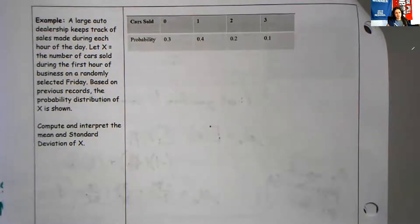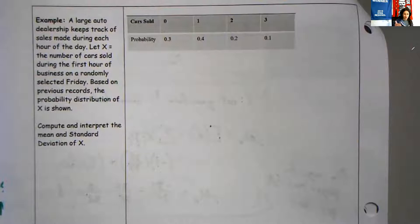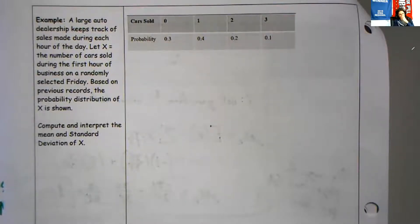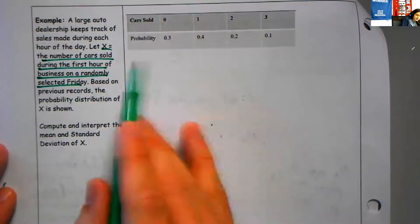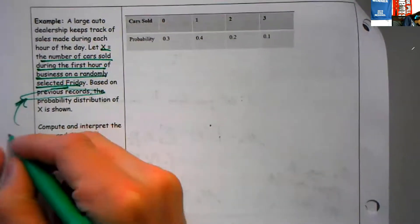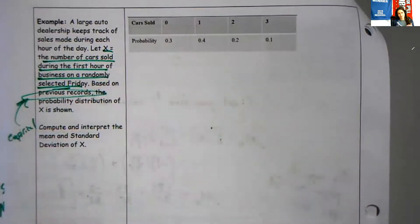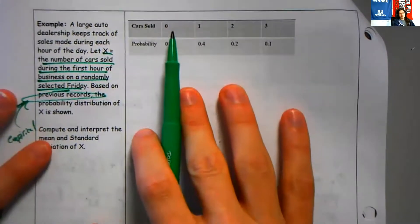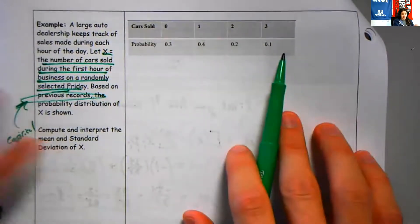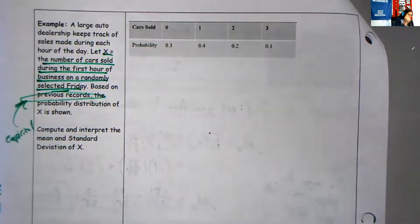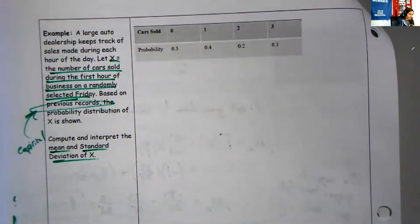Looking at an example, the simplest example we can have here. We're going to sell cars. We've got the probability those cars are sold. We can calculate and interpret the mean and standard deviation of X. Let X equal number of cars sold in the first hour of business on a randomly selected Friday. Based on previous records, you might call this an empirical distribution.